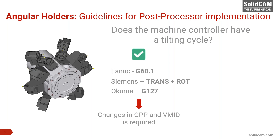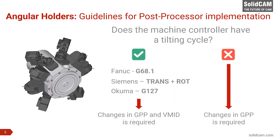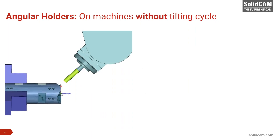Even if the controller is capable of supporting the tilting cycle, this doesn't mean the customer really has it, because in most cases this comes as an option. We found that many times this is actually quite expensive for a customer — even if your controller is capable, you have to pay extra to get it. The reality is that many revolver machines, especially single channel ones, come with low budget controllers which often don't have the tilting cycle. Today I will cover that first because it is the most common case.